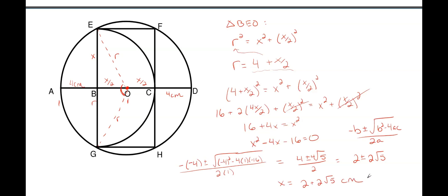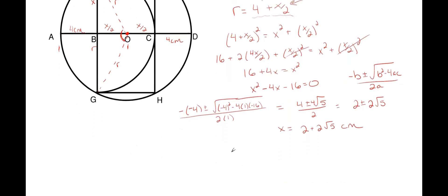We have found the side of our square: X = 2 + 2√5. Plugging back in to get the radius: R = 4 + X/2 = 4 + (2 + 2√5)/2, which gives us R = 5 + √5 centimeters.